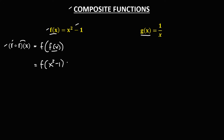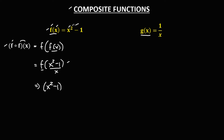To find the value of this function, from f of x, x is equal to x squared minus 1. So therefore, this x becomes x squared minus 1, then to the power 2, and minus 1.